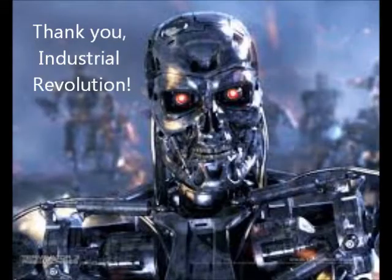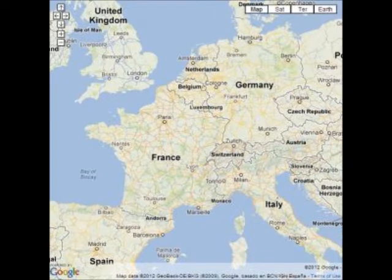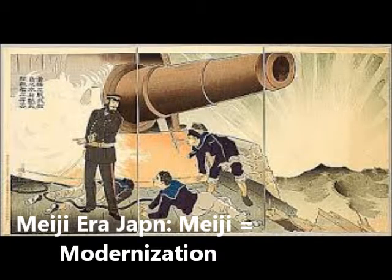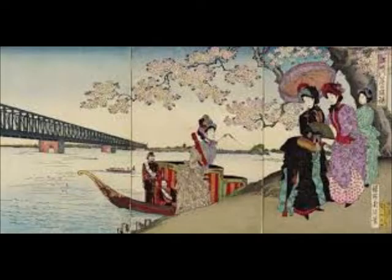The Industrial Revolution led to many changes in people's lives. It started in Great Britain and spread to continental European countries like Belgium, France, and Germany. Later, industrialization spread to the United States and then to places like Japan — remember the Meiji Restoration period when feudalism ended in Japan? That started in the late 1800s following industrialization in Europe and the USA.